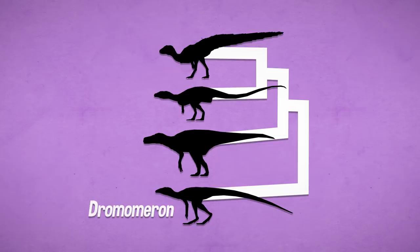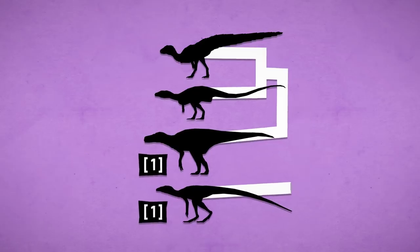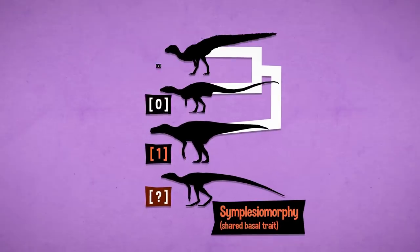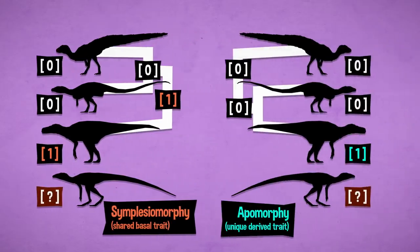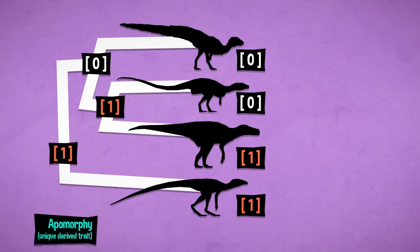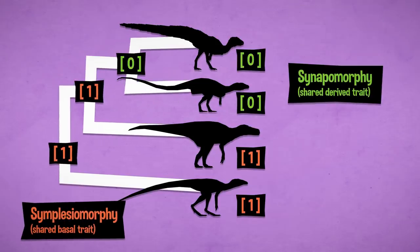For example, a dinosauromorph, Dromomaron, and a dinosauriform, Herrerasaurus, both have a scar on the front face of their thigh bone near the knee. Without Dromomaron in our matrix, we wouldn't be able to say whether that character state is plesiomorphic in dinosauriforms, or just apomorphic to Herrerasaurus. When ancestral conditions change based on new evidence, the derived states and the groups they define change with them.